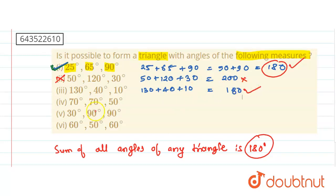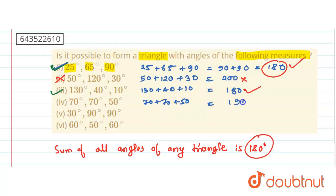Now let us come to the fourth case: 70 plus 70 plus 50. 70 plus 70 is 140, plus 50 is 190. We want 180, so it is not possible to form a triangle with these three angles.